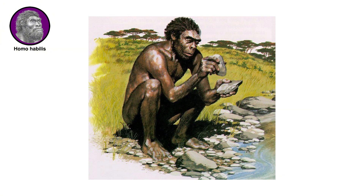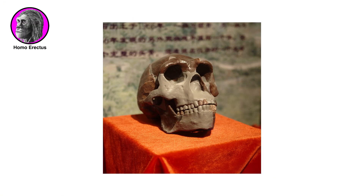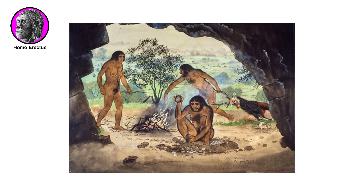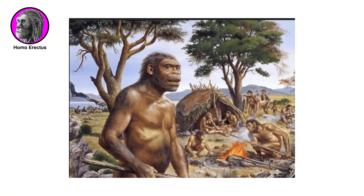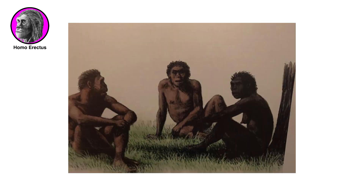Homo habilis lived on Earth between approximately 2.4 and 1.6 million years ago. Physically, it is the most different member of the Homo genus compared to modern humans. Early African Homo erectus fossils are the oldest known early humans to have possessed modern human-like body proportions, with relatively elongated legs and shorter arms compared to the size of the torso. These features are considered adaptations to a life lived on the ground, indicating the loss of earlier tree-climbing adaptations.